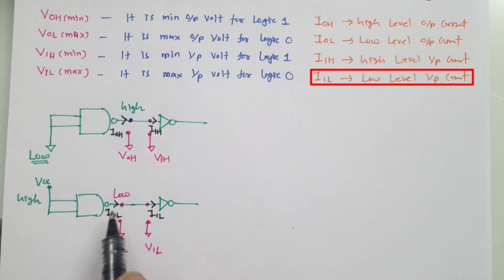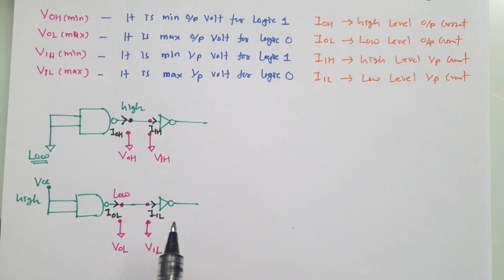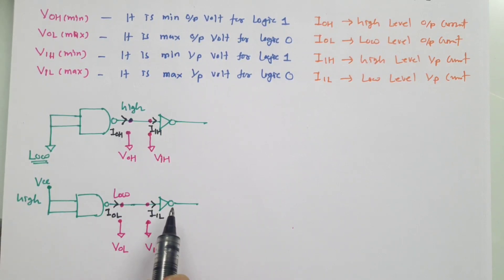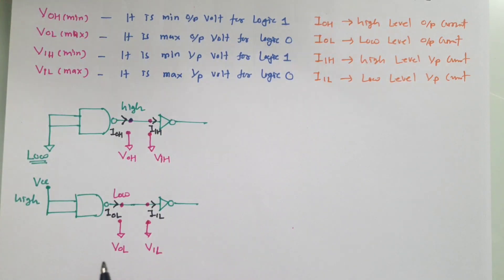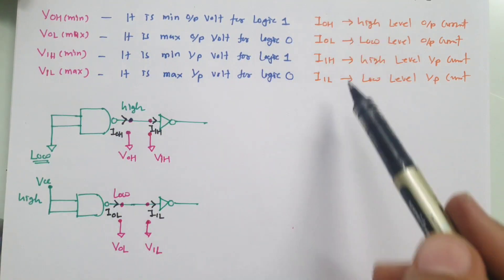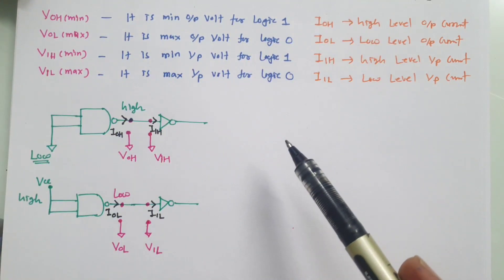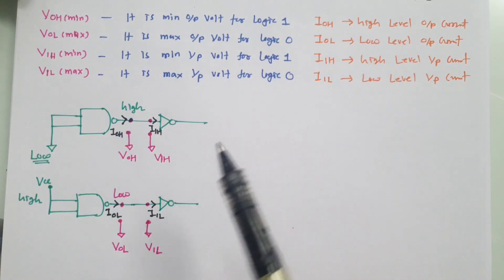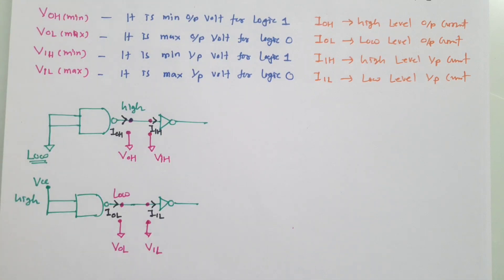If these conditions are not met, there can be malfunctioning of the circuit and a proper output may not come. So that is how these different definitions are essential in terms of noise immunity of the system.